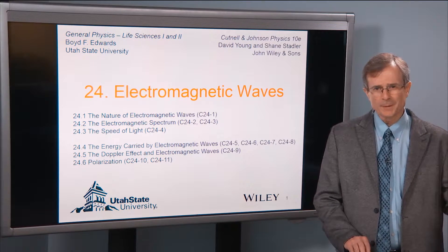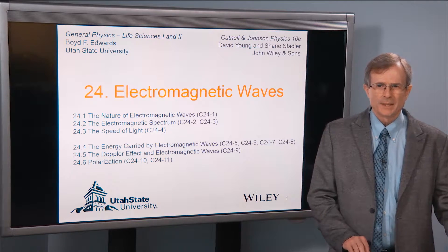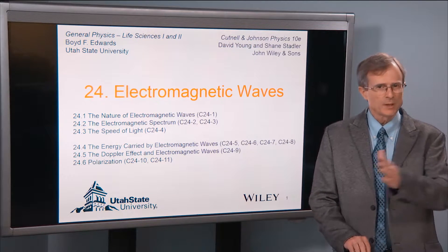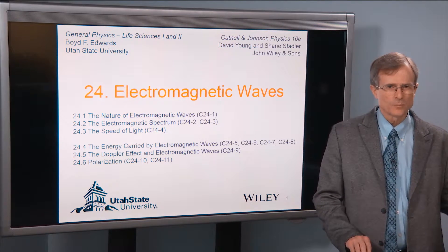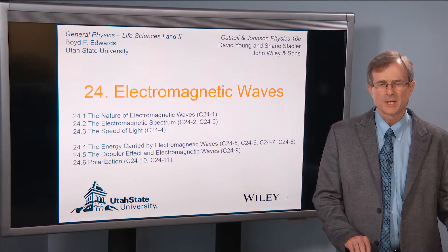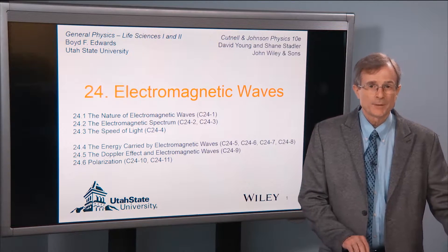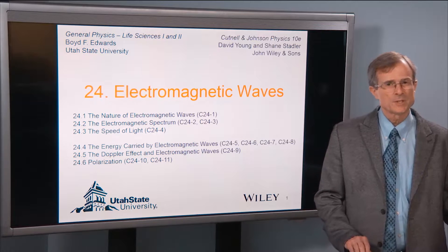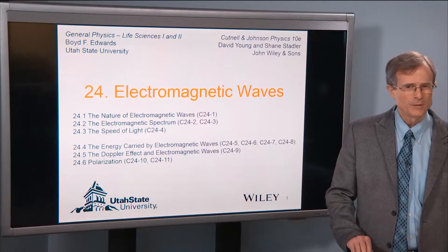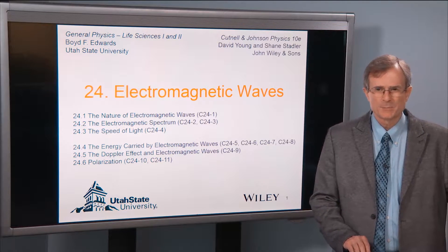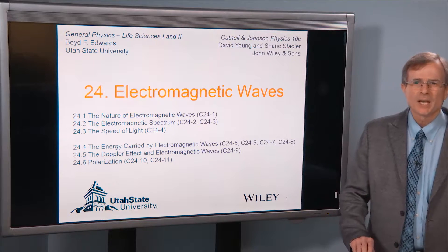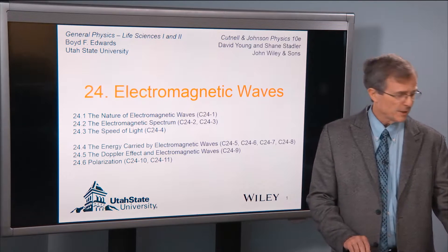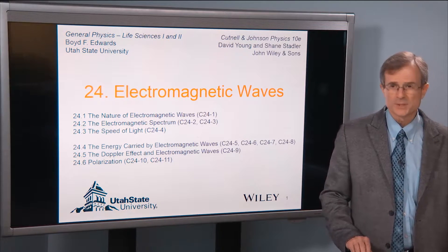We'll talk about the nature of these waves, the electromagnetic spectrum, which includes all these different kinds of waves — radio, x-rays, etc. We'll talk about the speed of electromagnetic radiation, which is the speed of light. All of them travel at the same speed. We'll also talk about the energy carried, the Doppler effect, and some very interesting polarization effects.